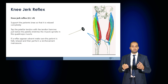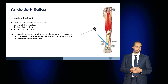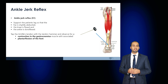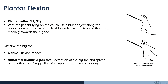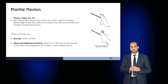If the knee jerk reflex appears absent, offer to reinforce with the Jendrassik maneuver. The ankle jerk reflex, mediated through S1, is tested by supporting the leg with the hip slightly abducted, the knee flexed and the ankle dorsiflexed. Tap the Achilles tendon with the tendon hammer and observe for a contraction in the gastrocnemius muscle associated with plantar flexion of the foot. The plantar reflex, mediated through L5 and S1, is tested with the patient lying on the couch: use a blunt object to scrape the lateral edge of the sole of the foot and then towards the big toe. Observe for flexion of the toes — this is a normal response. An abnormal or Babinski positive response is extension of the big toe with spreading of the other toes, suggestive of an upper motor neuron lesion.